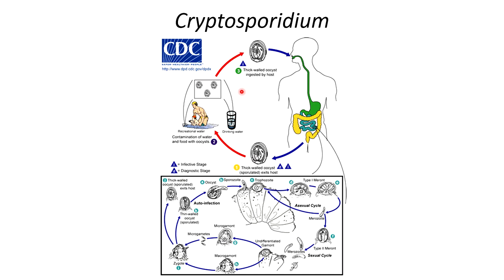Here's the life cycle of Cryptosporidium — overall pretty similar to the other organisms. A human gets infected by ingesting the oocyst, which is already sporulated. It then reaches the intestines. In the small intestine, you have a meront, where they undergo asexual reproduction. The meront then releases the merozoites. The merozoites then form type II meronts, and that's when they begin the sexual reproduction cycle. The merozoites are released from the type II meront and then differentiate into the microgamont — the male form — or the macrogamont, the female form. The male releases microgametes, which fertilize the macrogamont, and that produces a zygote.